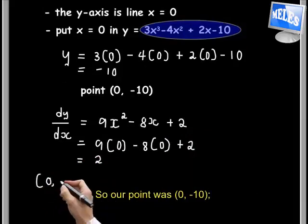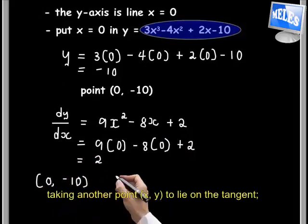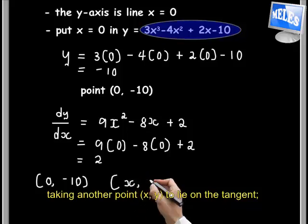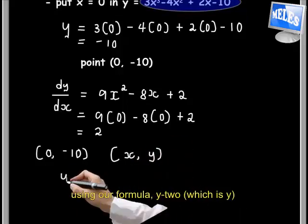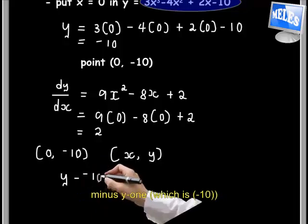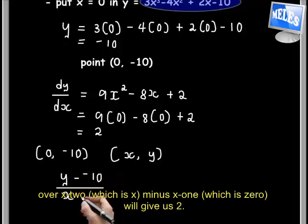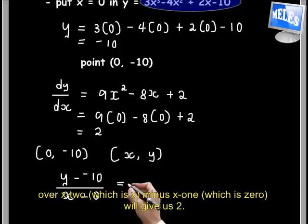So our point was (0, -10). Taking another point (x, y) to lie on the tangent, using our formula: y minus y1 over x minus x1, which is y minus negative 10 over x minus 0, equals 2.